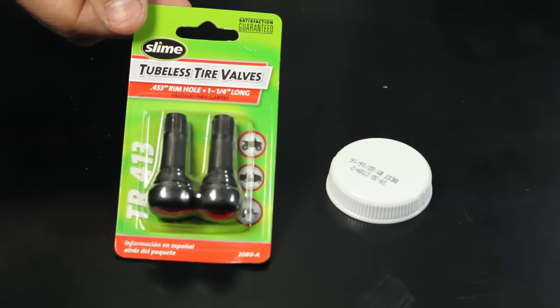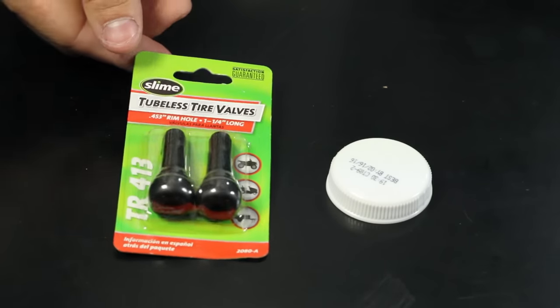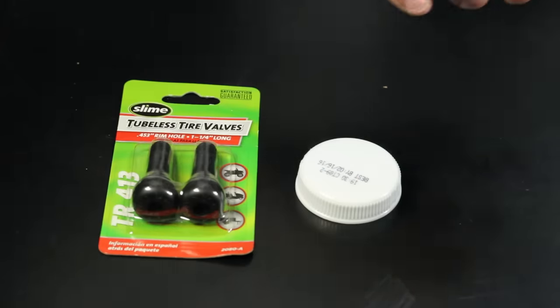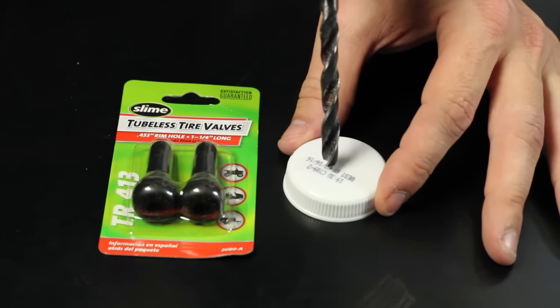To start with, we're going to install a tire valve in the cap to the bottle. Begin by drilling a hole in the bottle just smaller than the tire valve itself.